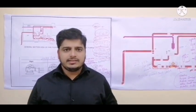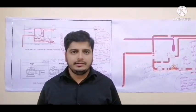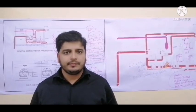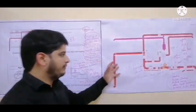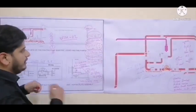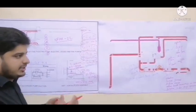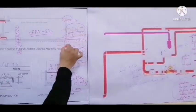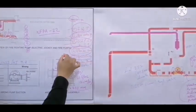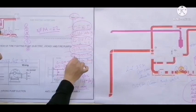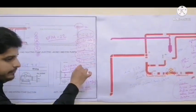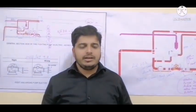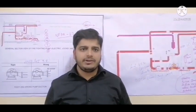So guys, these are the main components of the suction line. Let me make a recall of our six main components: number one, main firefighting water tank; number two, anti-vortex plate; number three, OS&Y gate valve with tamper switch; number four, flexible connection; number five, eccentric reducer; number six, suction gauge. Similarly, we will discuss discharge line components in our next upcoming video. If you like our videos, please like, share, comment, and subscribe.